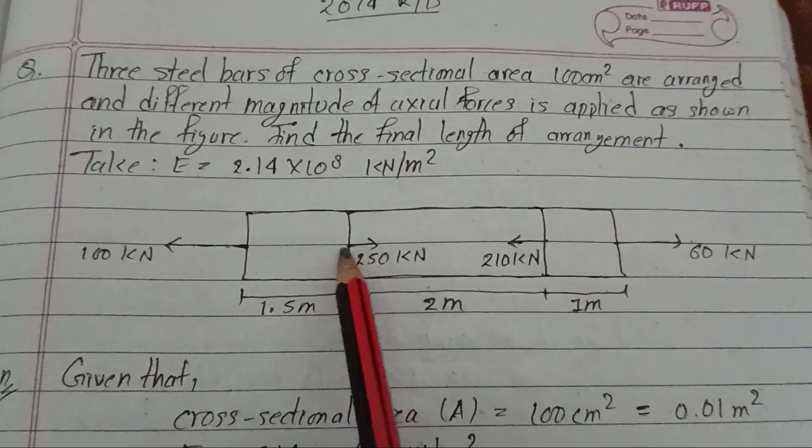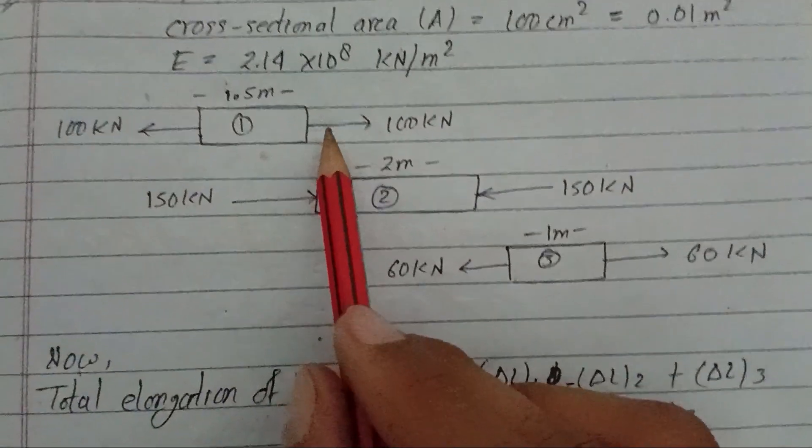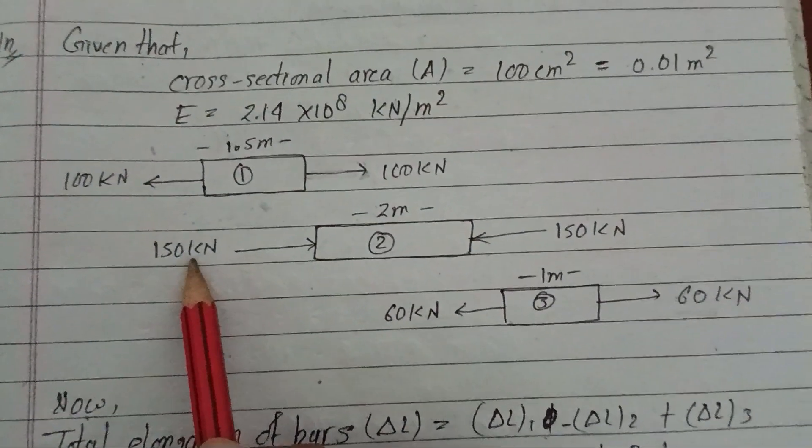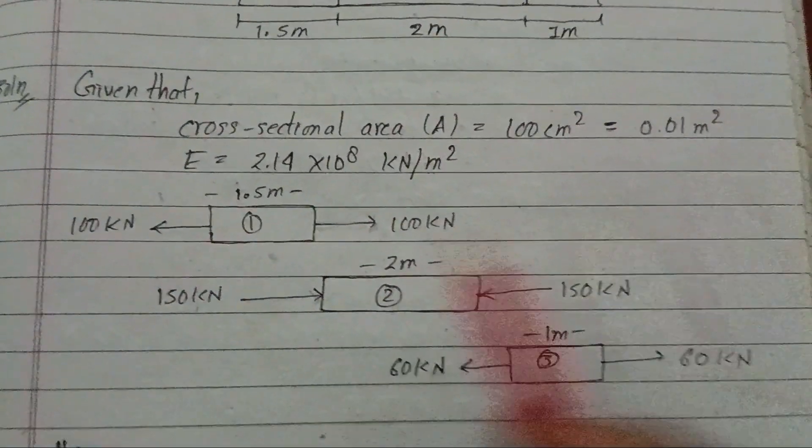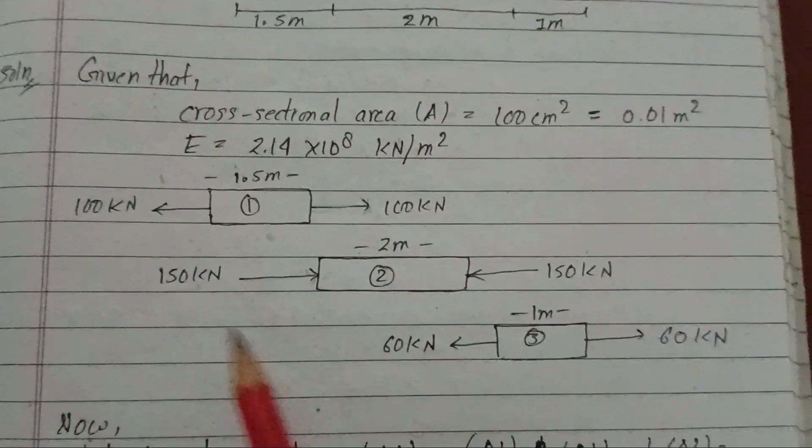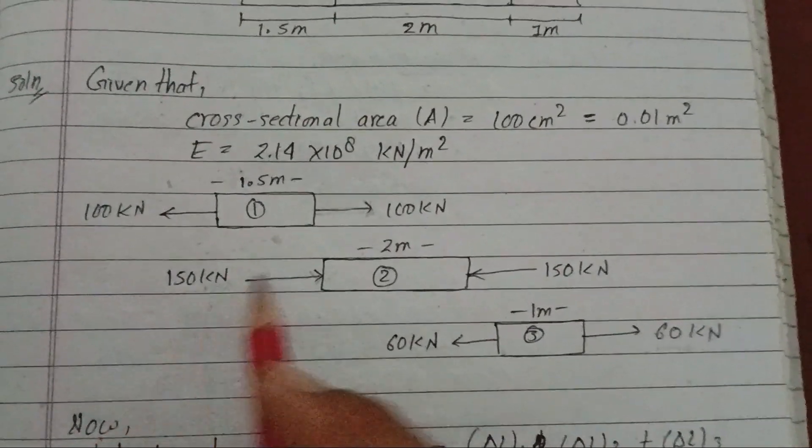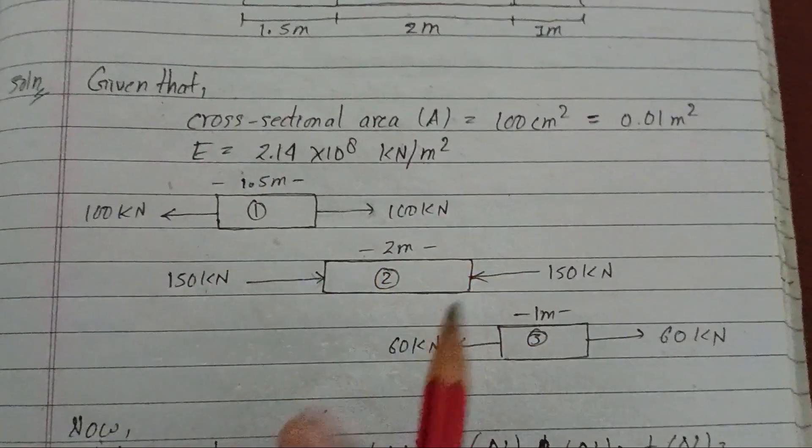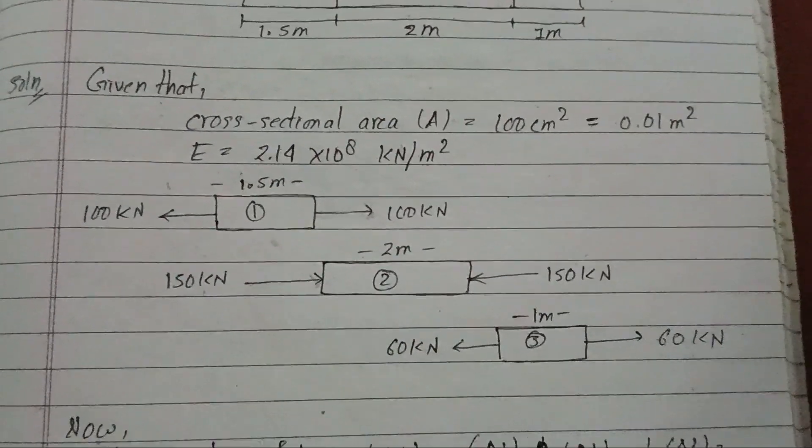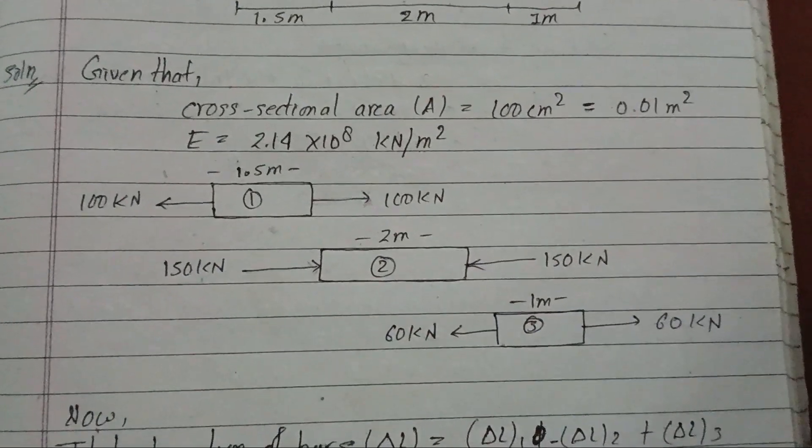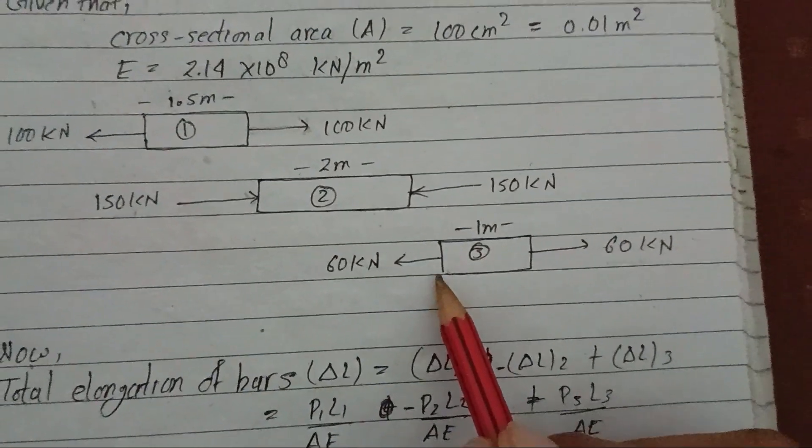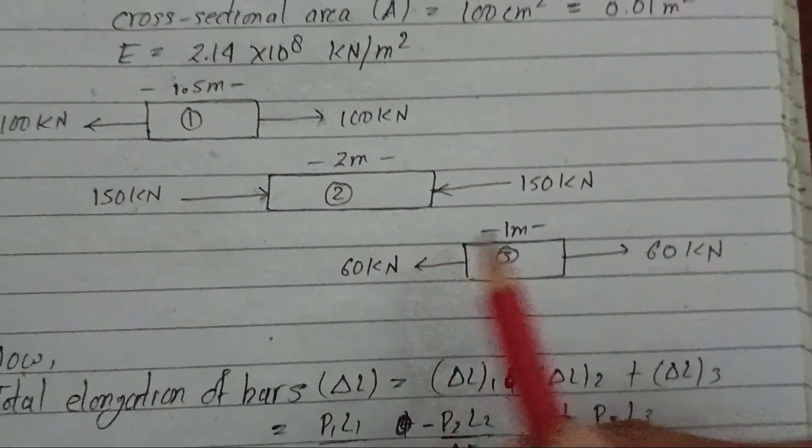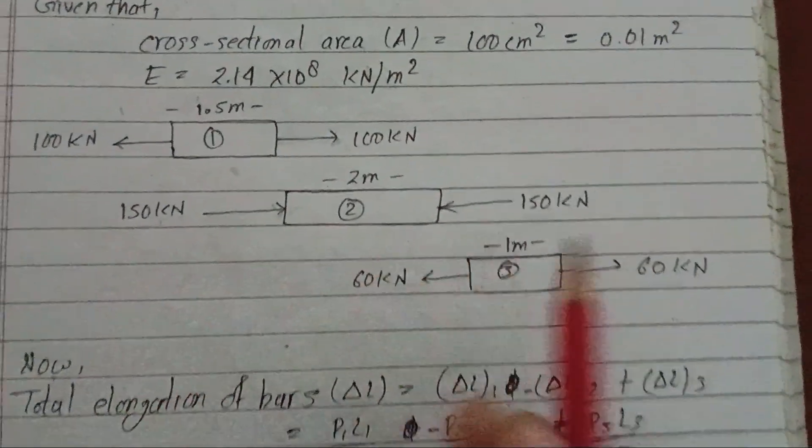For the first section, we have 150 kilonewton minus 100 kilonewton equals 50 kilonewton in compression. So this is a compressive force, that's why it's minus. For the second section, we have a compressive force. The last section also has a minus, so it's compressive. Actually, the last one is 60 kilonewton, which is tensile.